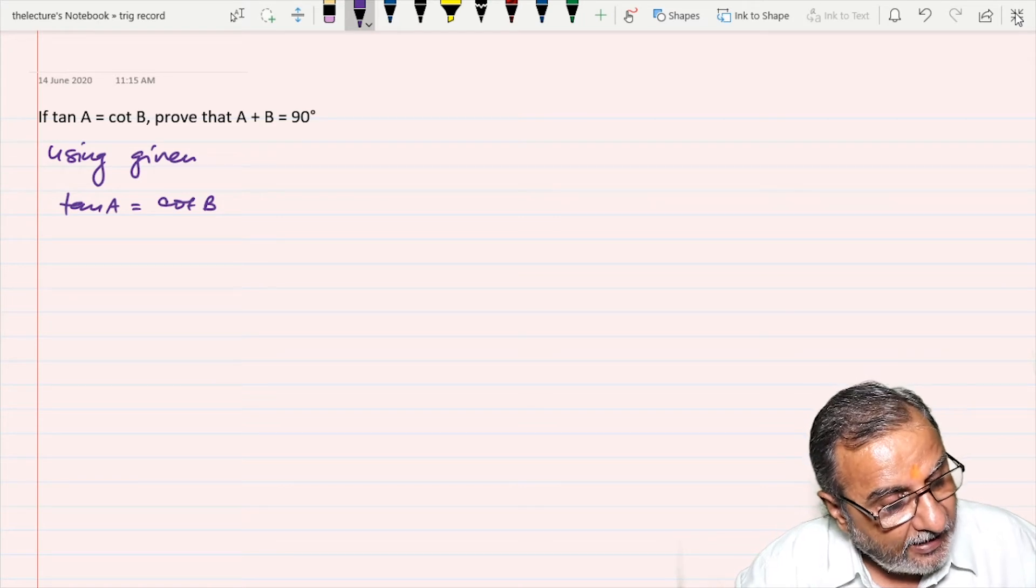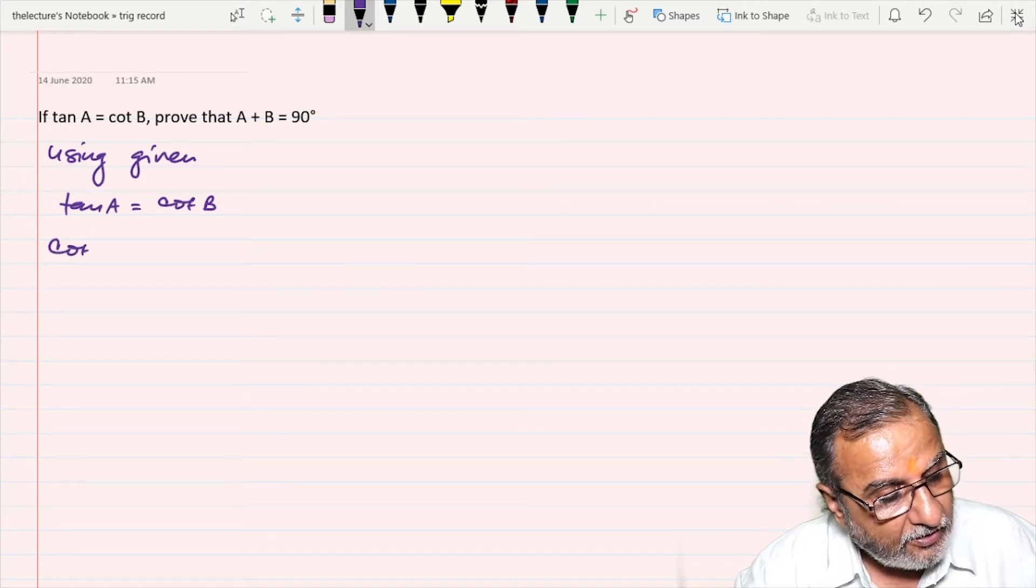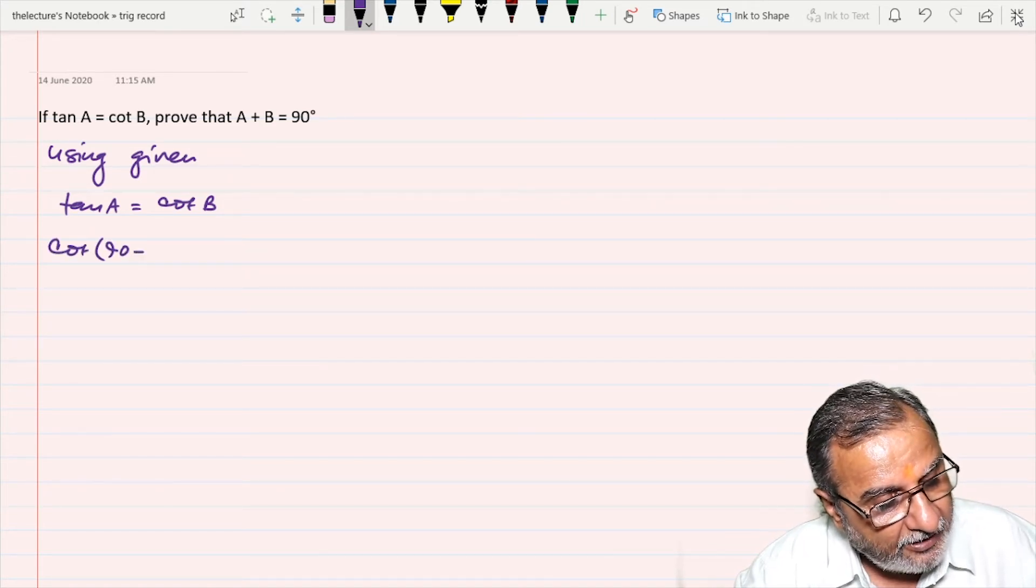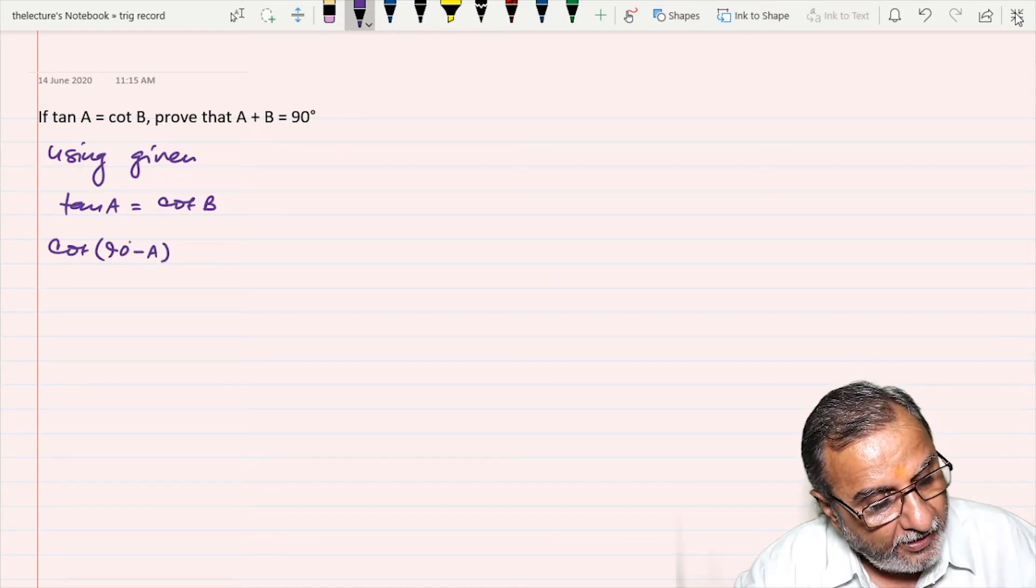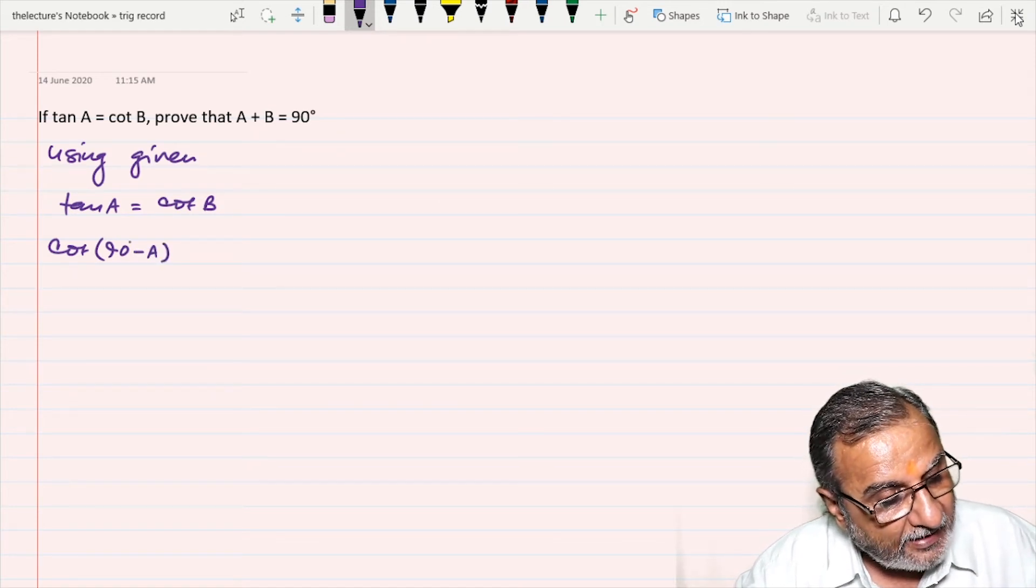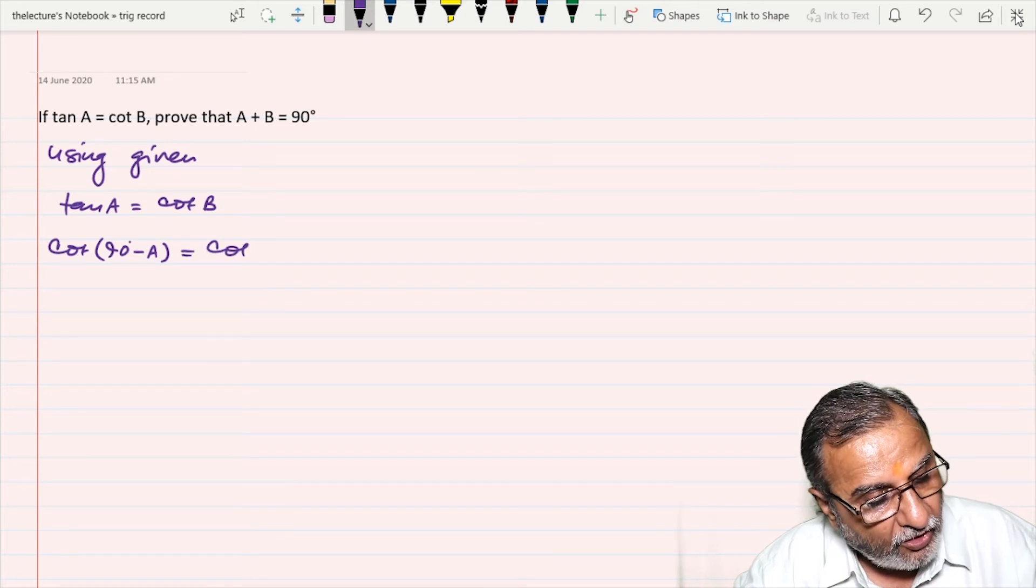So I am changing tan A, that is written as cot(90 - A) degrees. Cot(90 - A), that is tan A, and here is cot B.